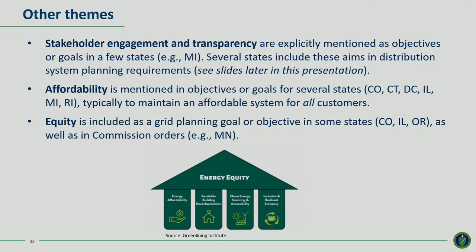Several other themes came up that are important but weren't as commonly mentioned: stakeholder engagement and transparency, affordability, and equity. Affordability was mentioned in several states and D.C., typically around maintaining an affordable system for all customers. In Rhode Island, the first objective of their grid mod initiative is to control the long-term costs of the electricity system. Equity is included in goals or objectives for grid planning for some states — it appears as an identified objective and also comes up in commission orders.